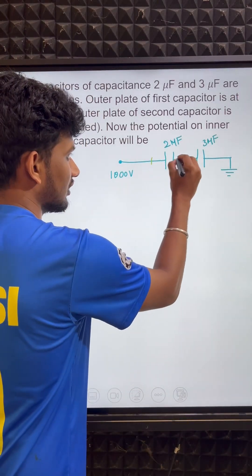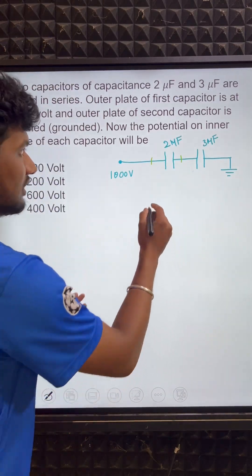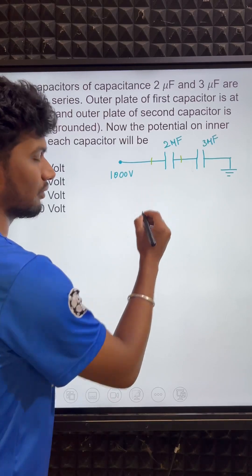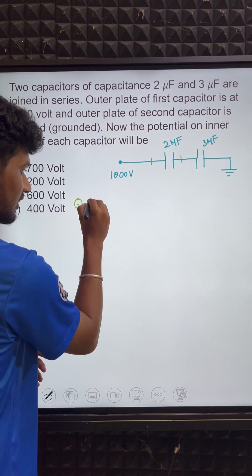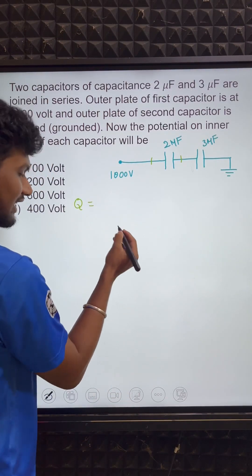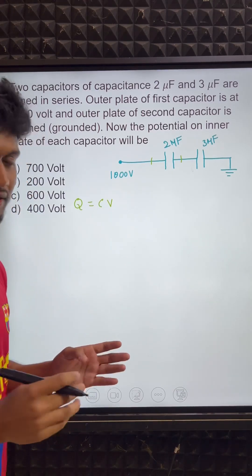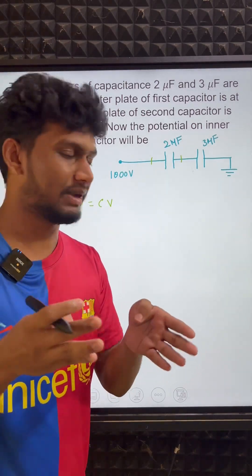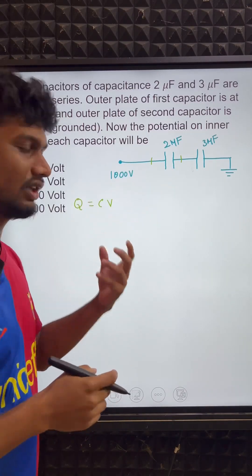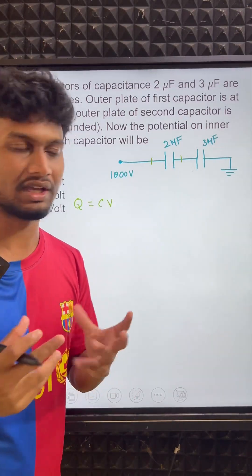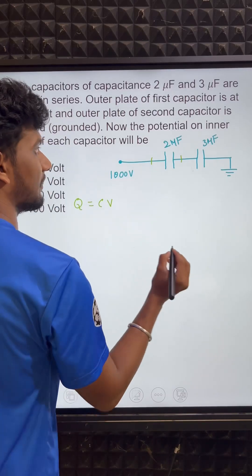A capacitor develops a voltage difference across its two terminals. The charge that develops follows the relation Q = C × V, where V is the voltage across the plate, C is the capacitance, and Q is the charge that develops.